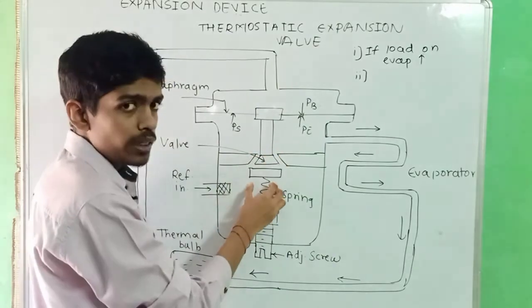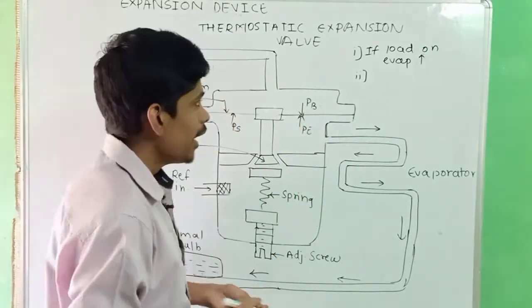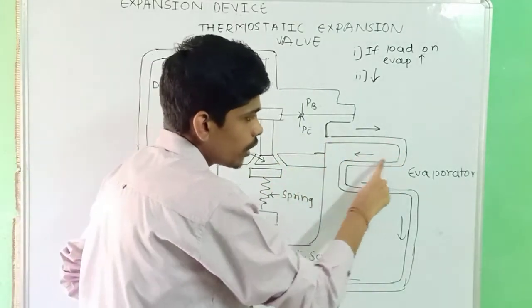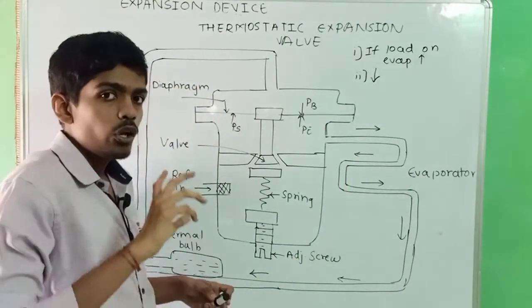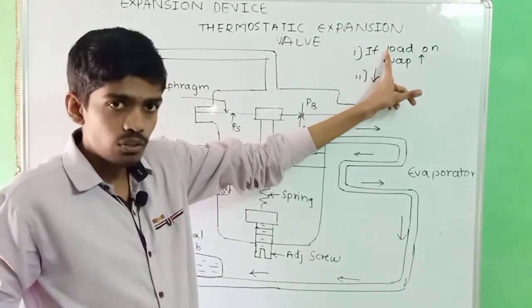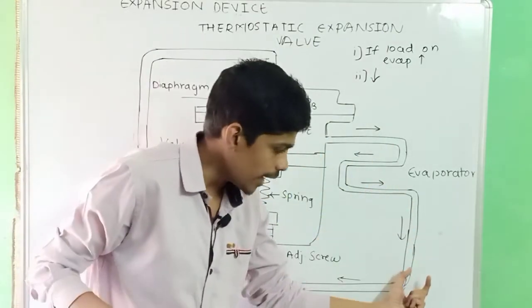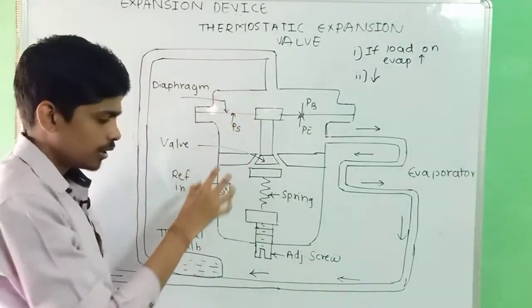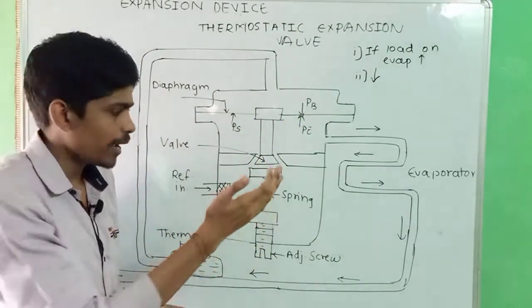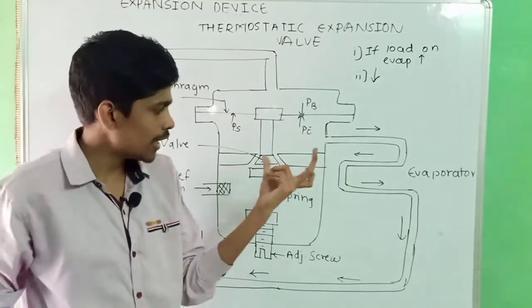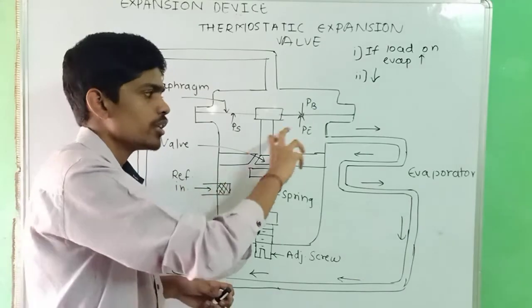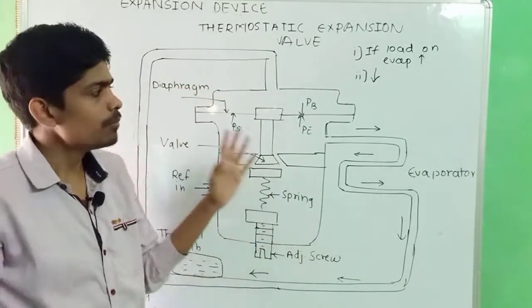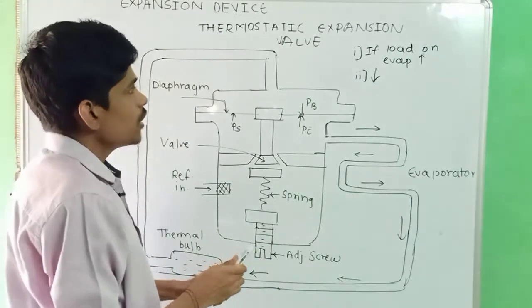Condition two: if the load on the evaporator decreases, the liquid refrigerant flowing through the evaporator coil will not boil as fast. Some amount of liquid will remain and come up to the outlet, reducing the temperature and pressure in the filler bulb. Due to the lower bulb pressure, the spring and evaporator pressure become dominant, the diaphragm moves up, and the valve gets closed, restricting the amount of refrigerant flow to the evaporator until both pressures come to equilibrium.